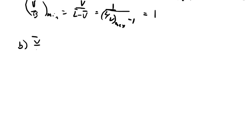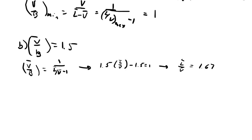For part B we are given a boil-up ratio of 1.5. From the same mass balance above you can solve for your L over V ratio. You'll find that your L bar over V bar ratio is about 1.67.